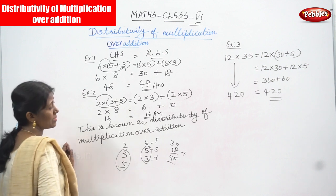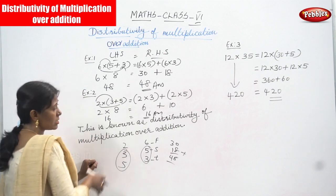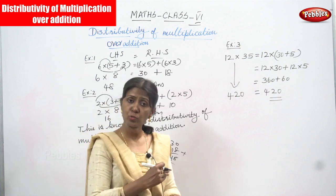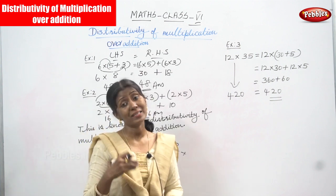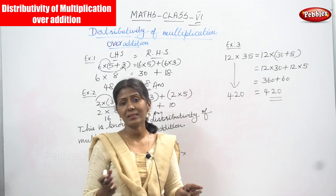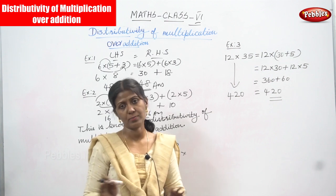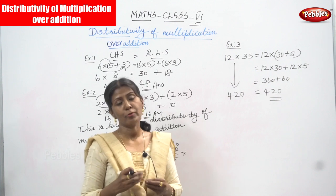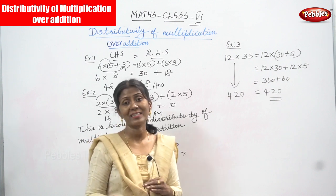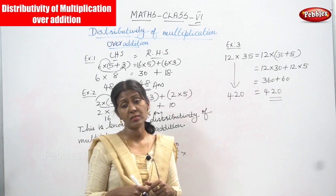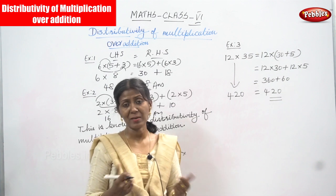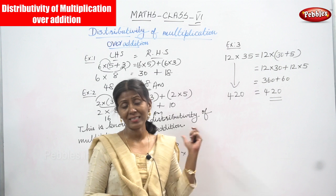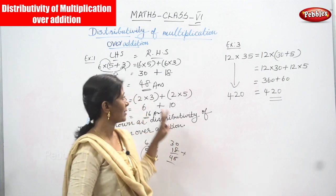This is called the distributive property of multiplication over addition. In this property, we use both multiplication and addition together, and we can still get equal answers on both sides. Even though you can interchange numbers for convenience, you get the same answer on both sides using multiplication over addition.